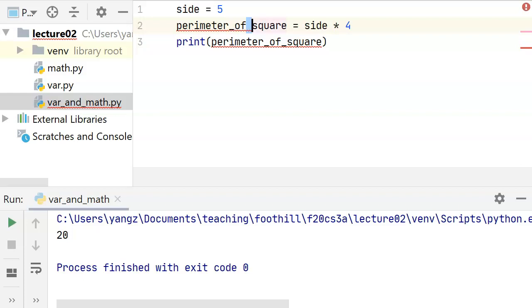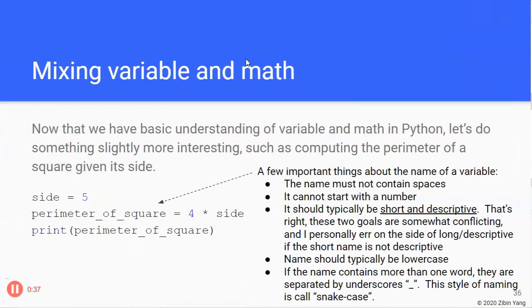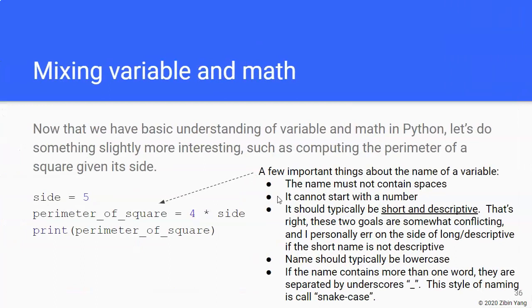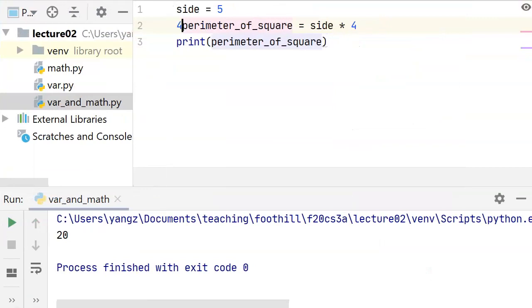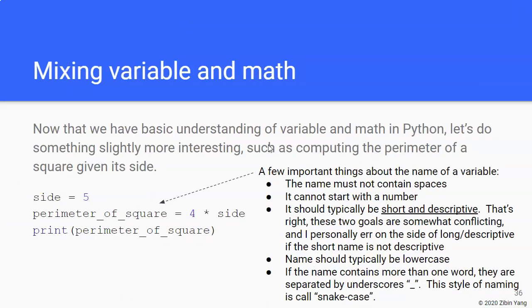We cannot use spaces in the name of a variable. And the name of a variable cannot start with a number, so I cannot put like four here. And as a matter of fact, I don't think I can put funny symbols and things like that because all of those have special meaning to Python.